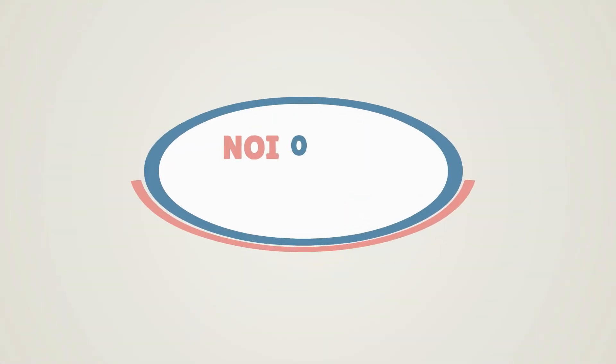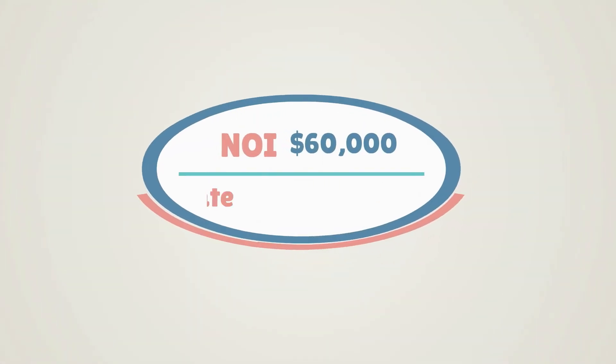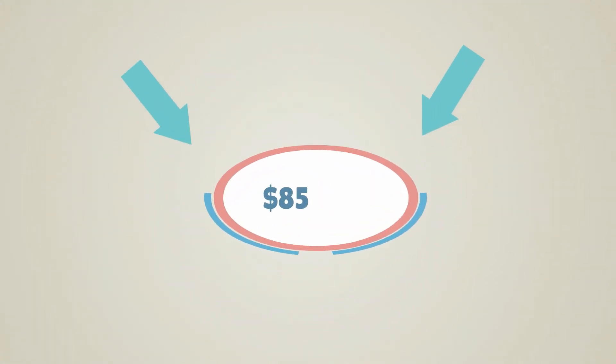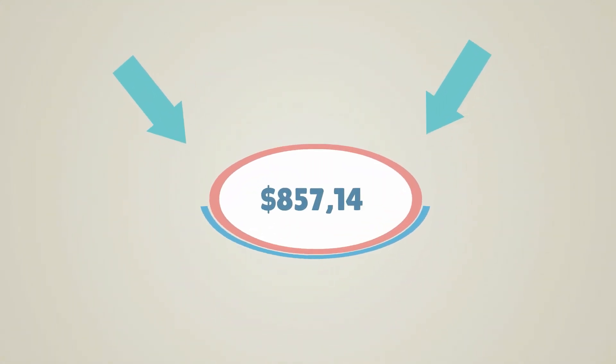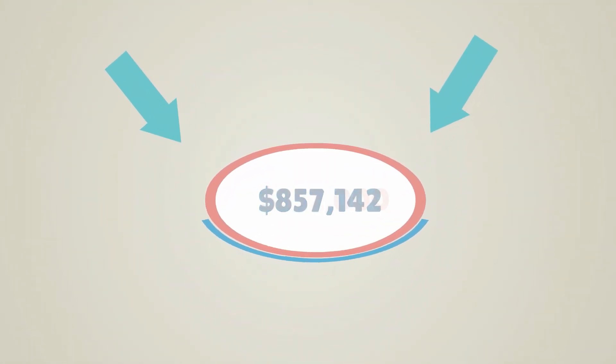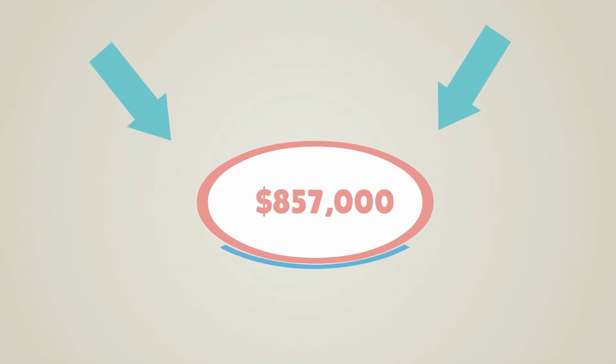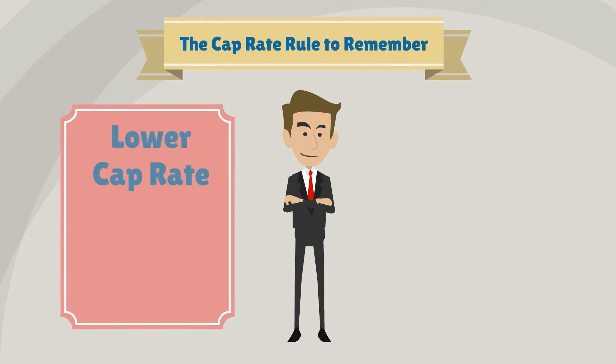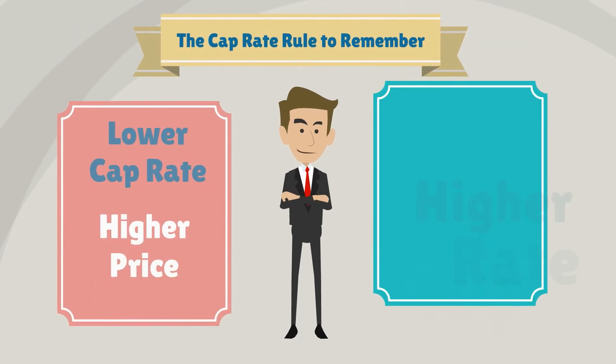How do we get this? Take the NOI of $60,000 divided by a cap rate of 0.07, and it equals $857,142 — rounded to $857,000.